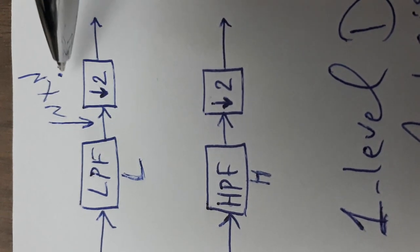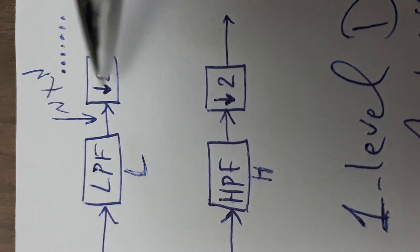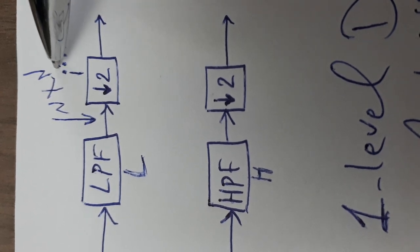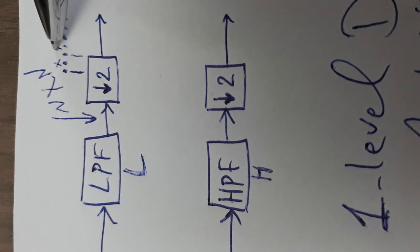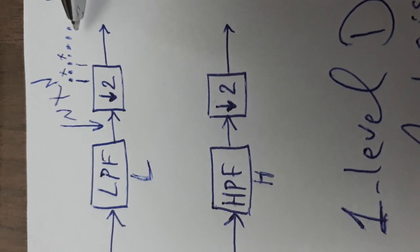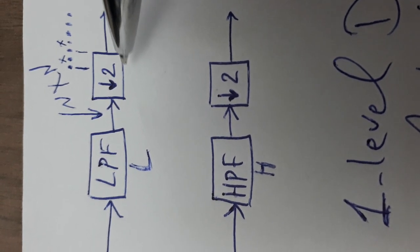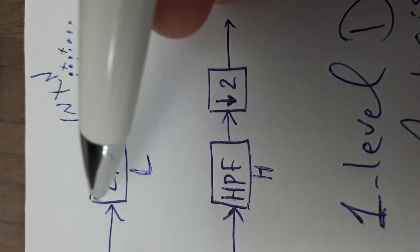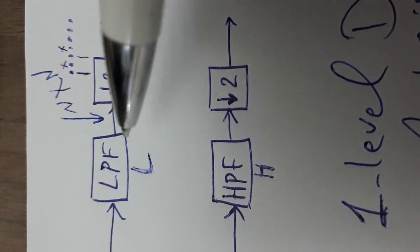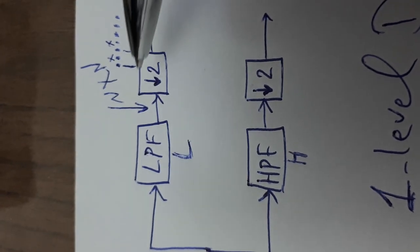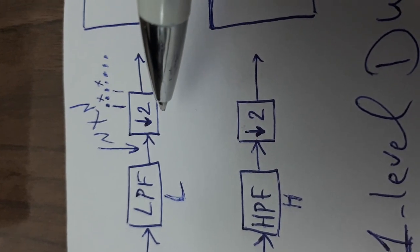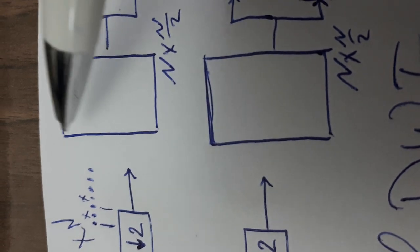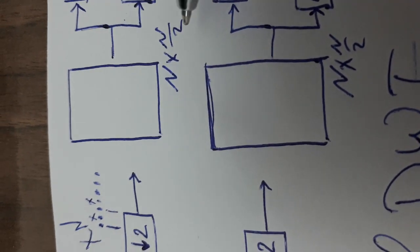Down-sampling by two means that along each row, we take every other pixel: use this pixel, cancel the next, use the next, cancel the one after, and so on. So if we have 100 pixels in a row, after down-sampling by two we will have 50 samples — divided by two. After finishing the filtration of all rows and applying down-sampling by two, the output will be n rows but n/2 columns.